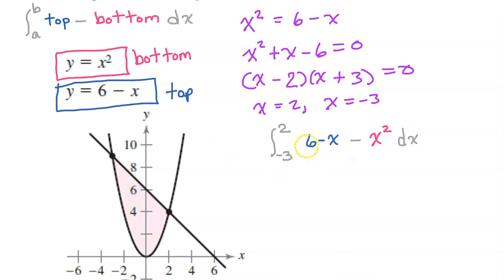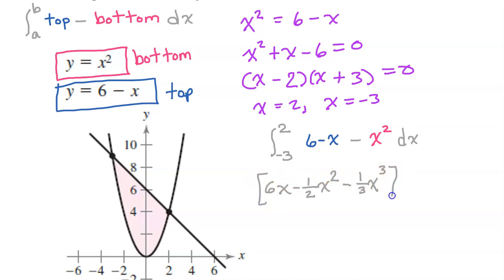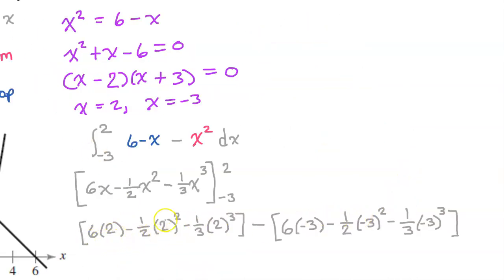Now let's integrate term by term. The anti-derivative of 6 is 6x. For the x term, increasing the exponent by 1 and dividing by the new exponent gives one-half x squared, with the minus sign kept. For x squared, increasing the power gives x cubed, divided by 3, so minus one-third x cubed. This is a definite integral, so we evaluate using limits of integration from negative 3 to 2 — finding the value at 2 minus the value at negative 3. For a free response question, you can leave your answer just like this. On the AP exam, I would really recommend leaving it here in case you make a careless mistake.